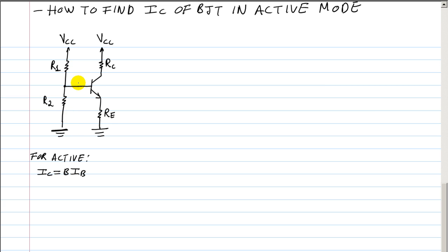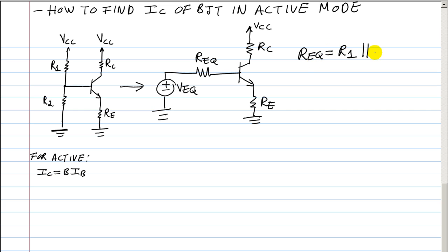The first thing you want to do is change this network to the following. We need to change from the four resistors to this other circuit. Our REQ is going to be R1 in parallel with R2.